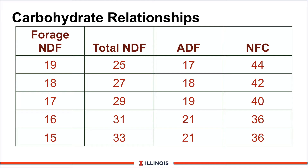Now let's look at some of the carbohydrate relationships we have in the NRC as guidelines. We are using forage-derived NDF on the leftmost column. As the forage NDF goes down — meaning you are feeding less forage fiber — the total amount of NDF should go up, so the committee is trying to balance rumen dynamics with total fiber level. You can also see that as you have less forage NDF, the actual amount of ADF will also go up to protect the rumen, and they are dropping down on the NFC. This is a very powerful chart because it shows you've got to balance all these various carbohydrate fractions to try to optimize rumen performance. The definition of forage NDF varies from state to state and from company to company.